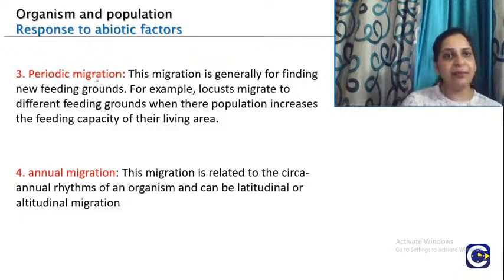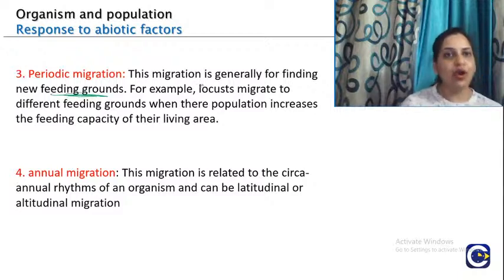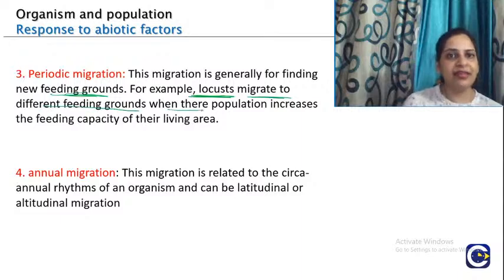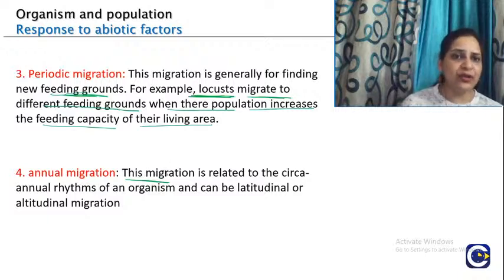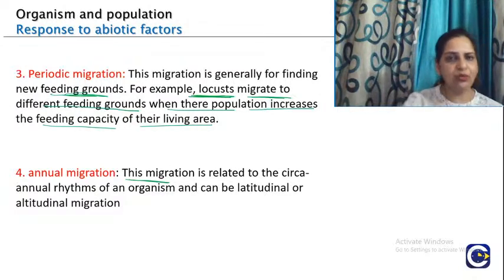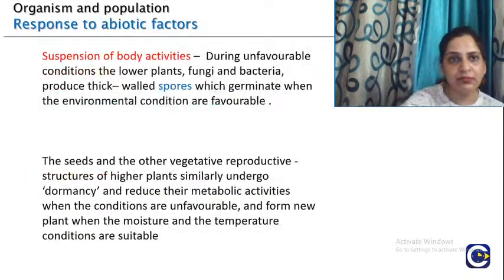Third is periodic migration — the periodic movement of organisms from one place to another, generally for finding feeding grounds. The prominent example is locusts, which migrate to different feeding grounds when their population increases. Fourth is annual migration according to environmental changes, which can be latitudinal or altitudinal migration.